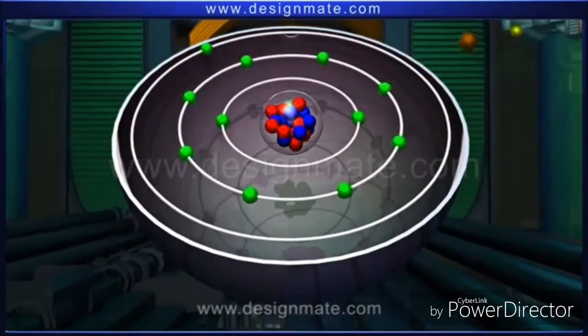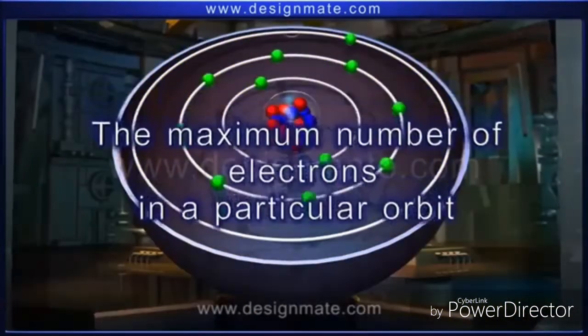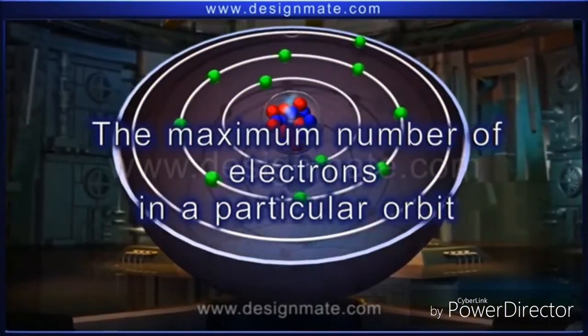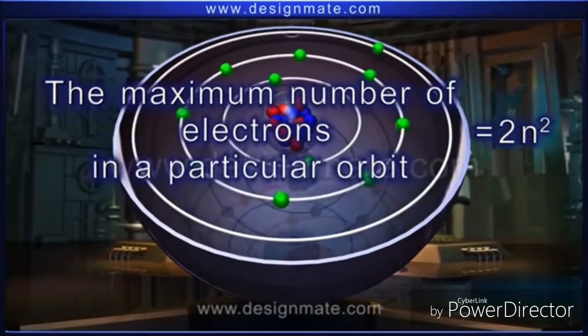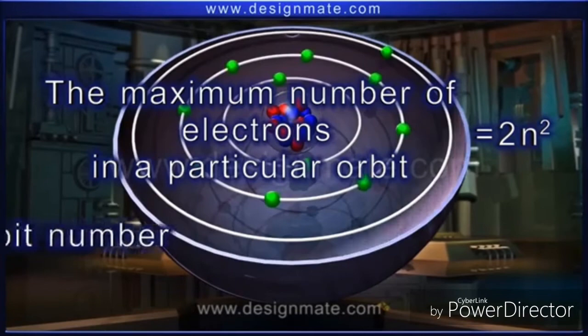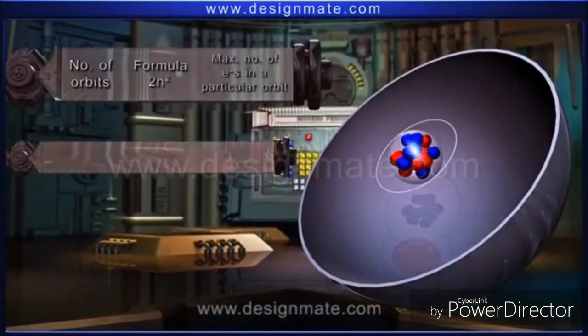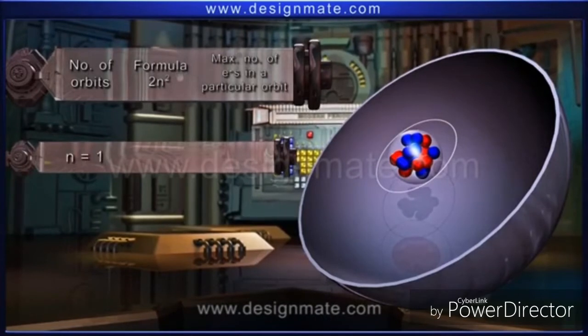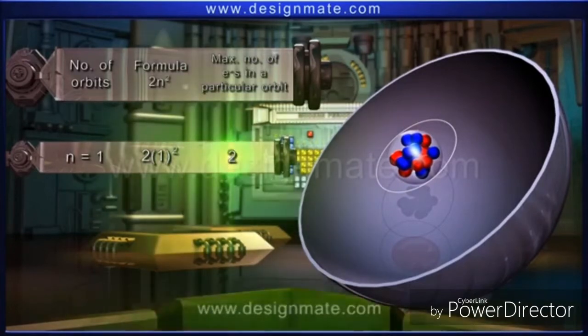The maximum number of electrons in each energy level, such as K, L, M, N, can be calculated from the relation 2n squared, or 2n power 2, where n is the number of the energy level. If we calculate using this relation, the K level is saturated with 2 electrons. Similarly, the second orbit is saturated with 8 electrons.